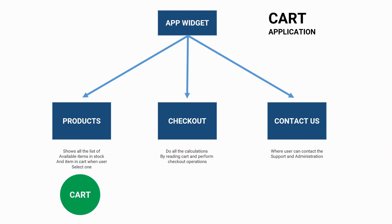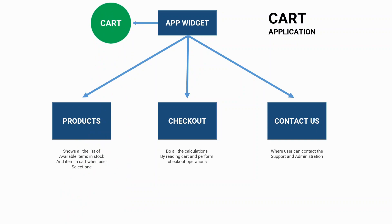So what we can do is take the state of the product widget — which is the cart — and take it up to the parent level. We can define this cart as a state of the app widget. Since siblings or children can communicate with the parent, the product screen will communicate with the cart whenever the user taps on an item, and will add the selected item to the cart. Once he has done with all the shopping, he navigates to checkout, and the checkout screen will read the cart to do all the calculations and perform the checkout operation, since children can access the state of the parent.